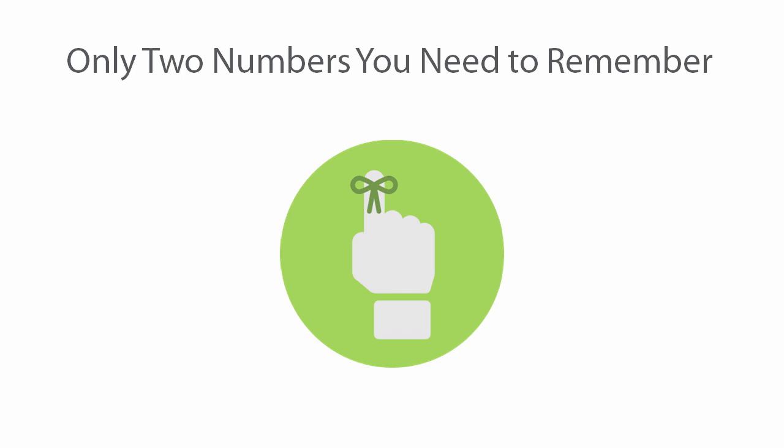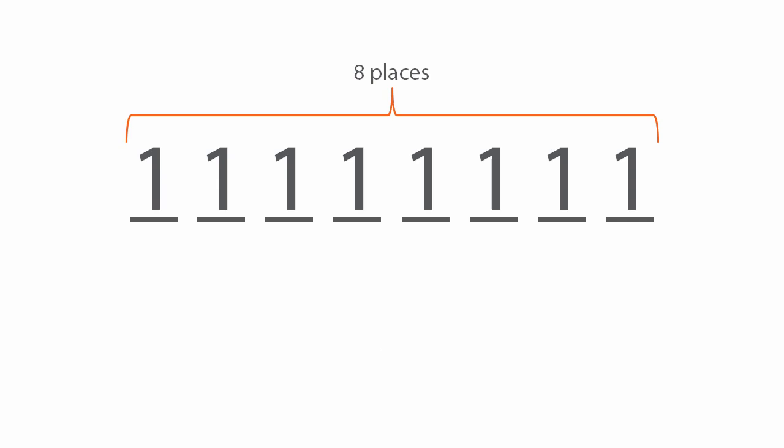There are really only two things you need to remember to convert between decimal and binary — just two numbers: 8 and 128. The number 8 represents 8 places. An IPv4 address is divided into 8-bit chunks called octets. Each bit can be a 1 or 0. Here we have all the bits set to 1.